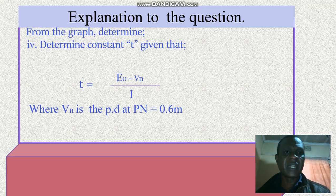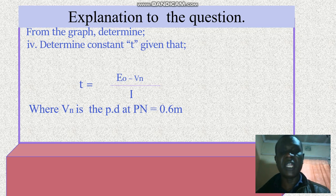So from the graph, determine the constant T, given that T is equal to E0 minus VN over I, where VN is the PD and PN is 0.64 meters. Calculation.